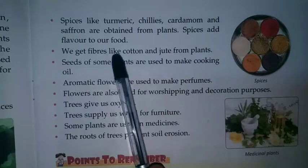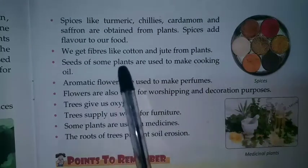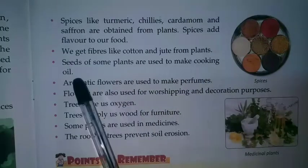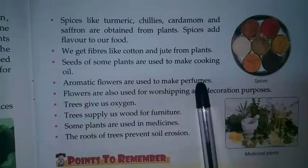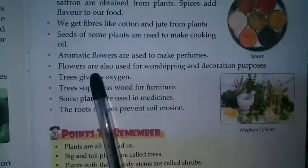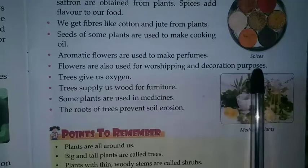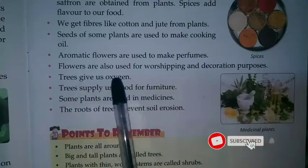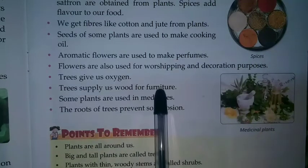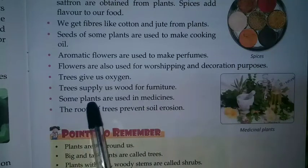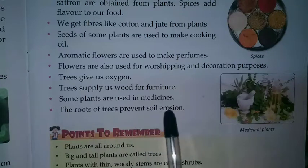We get fibers like cotton and jute from plants. Seeds of some plants are used to make cooking oil. Aromatic flowers are used to make perfumes. Flowers are also used for worshiping and decoration purposes. Trees give us oxygen and supply us wood for furniture. Some plants are used in medicines. The roots of trees prevent soil erosion.